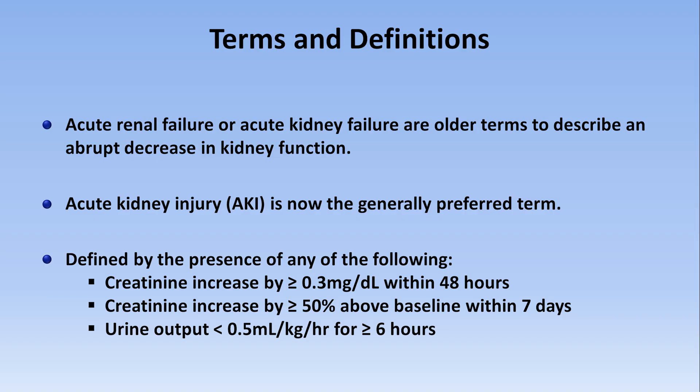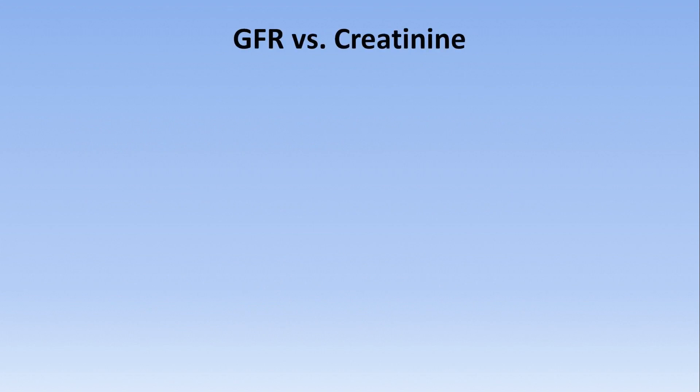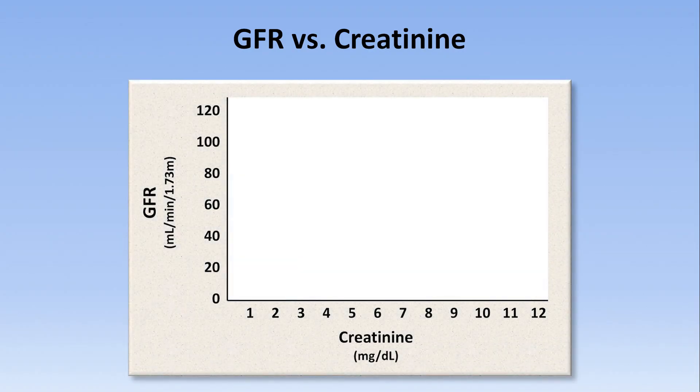The best index of overall kidney function is something called the glomerular filtration rate, or GFR. The GFR represents the rate of fluid movement across the glomerular capillary membrane. The higher the GFR, the better the kidneys are working. Unfortunately, the GFR cannot be measured directly and must instead be estimated, and the easiest way to do so is from the serum creatinine, according to any of a variety of equations, which also incorporate age, sex, and sometimes race.